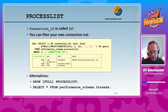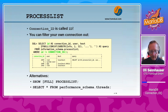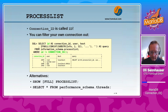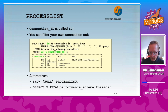Alternatives to this information_schema PROCESSLIST query are the commands SHOW PROCESSLIST or SHOW FULL PROCESSLIST, or you can also query this information from the performance schema, where you find everything in the view threads.